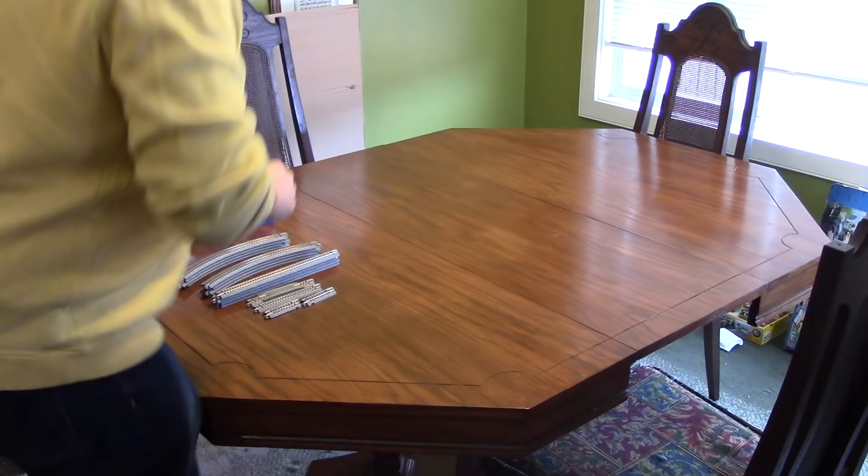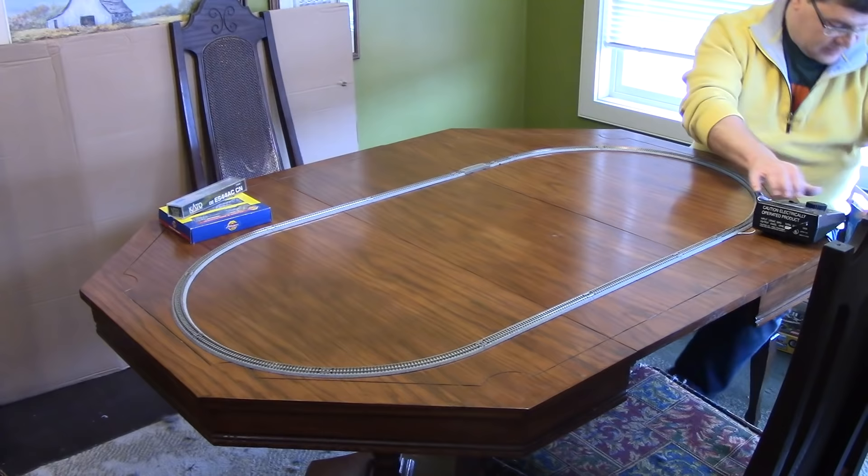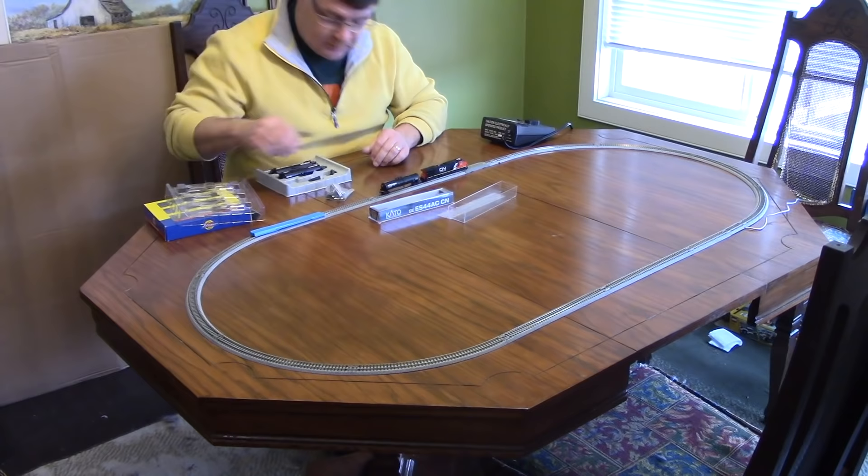As you can see here, I'm demonstrating how quickly the M1 starter loop can be set up and run. Using my dining room table with one leaf in, I did this setup, ran a short train, and then took down the track in eight minutes. So in this sense, you can have a workable loop and start playing around in a very short period of time. But this is only the starting point.